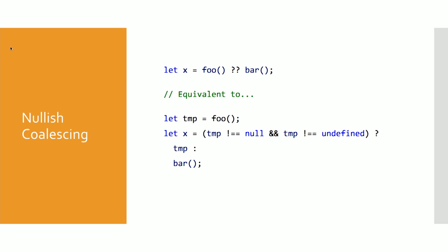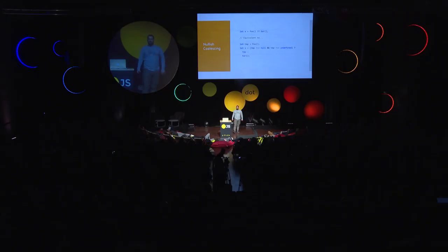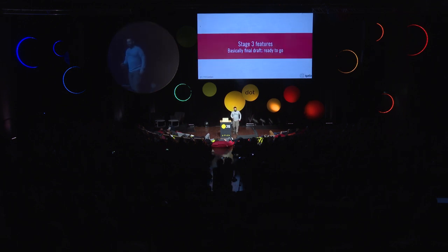Similarly, nullish coalescing — a lot of people like to use double-bar OR for defaults, saying if an option is provided use it, otherwise default to another value. But if you use OR, this is really broken, because if you have zero or the empty string, it gets treated as the missing value and you fall back to that other value. So nullish coalescing, the question mark question mark operator, just checks for null and undefined — kind of like optional chaining.